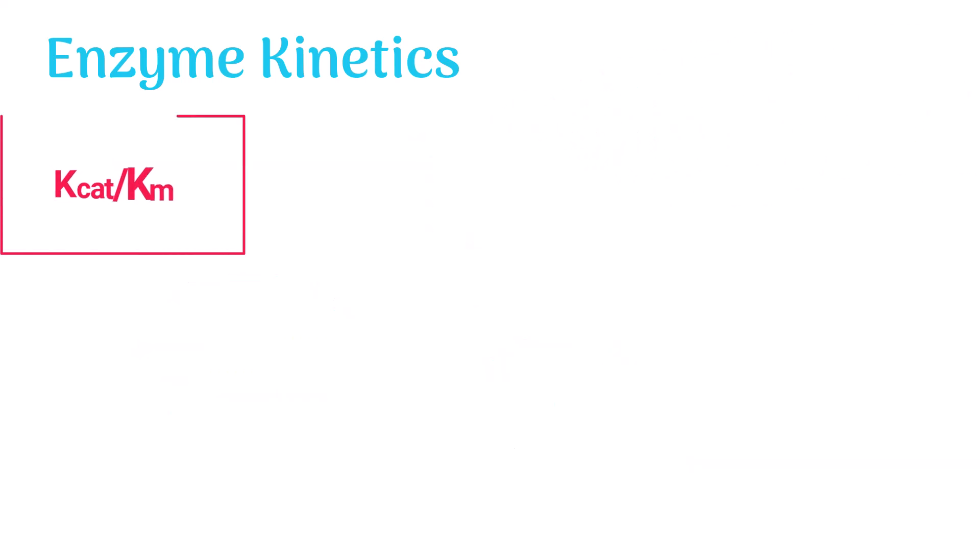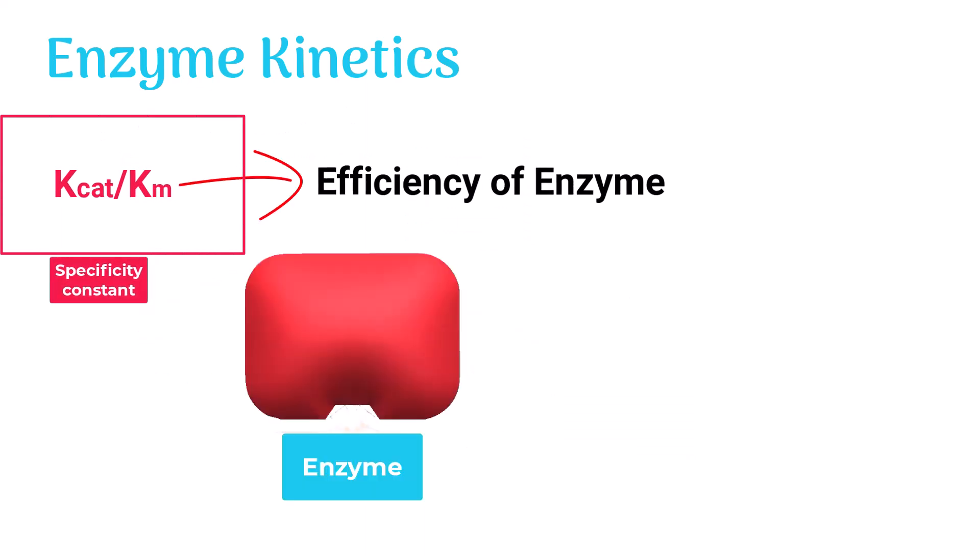The ratio of KK to Km represents the efficiency of enzyme. Enzyme with higher efficiency converts the substrate more rapidly into the product.